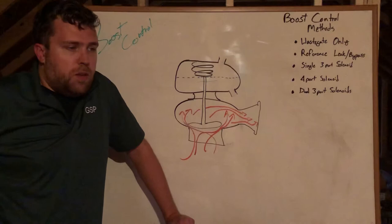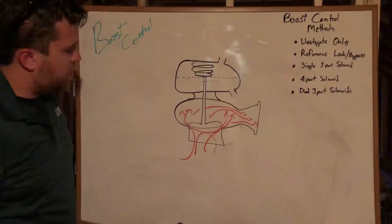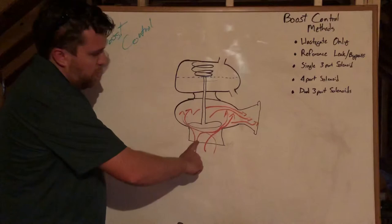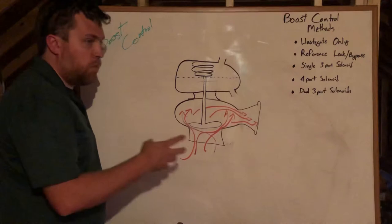The way that you do that is through a wastegate. It takes waste exhaust and gates it to atmosphere. In this image that I have drawn here, this is attached to your exhaust pre-turbo. In some cases it's actually mounted on the turbo, but that's outside the scope of the video.